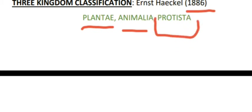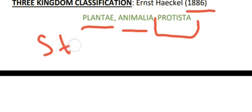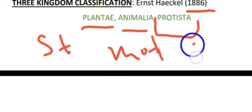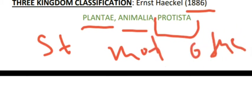Plants are organisms that make their own food and are stationary, so they are placed in the plant kingdom. Animals are motile and are placed in the animal kingdom. Other organisms that did not fit into either were placed in Protista. This gave us the three kingdom classification.